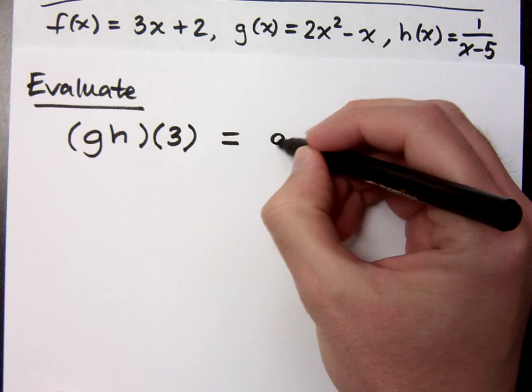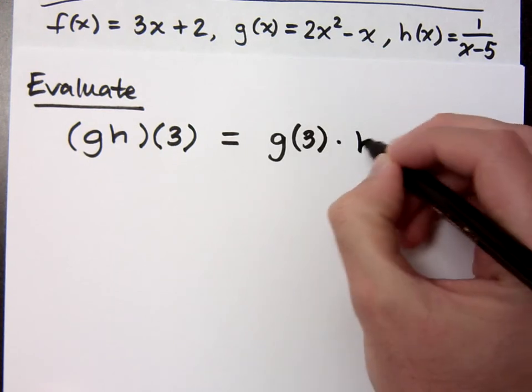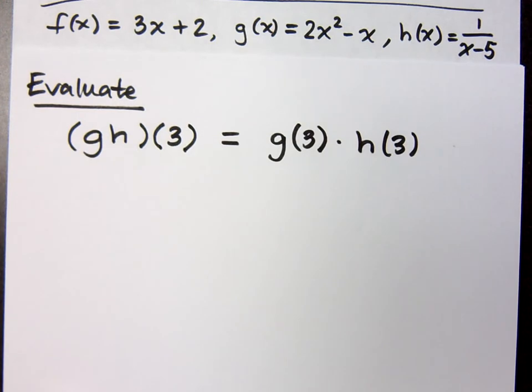g of 3 times h of 3. So that means you just take these guys individually, evaluate them, and then multiply the results. Okay,